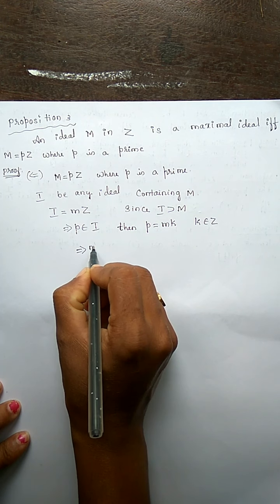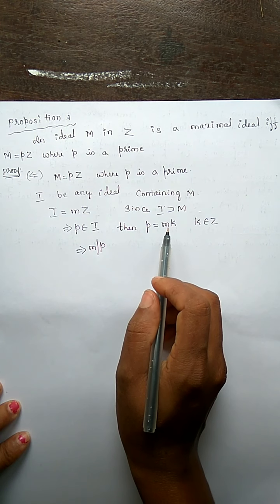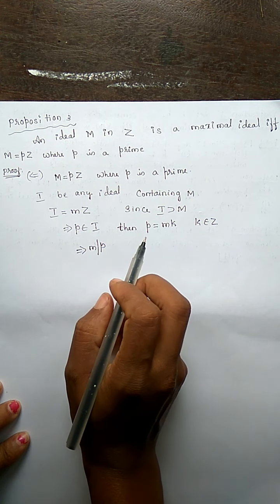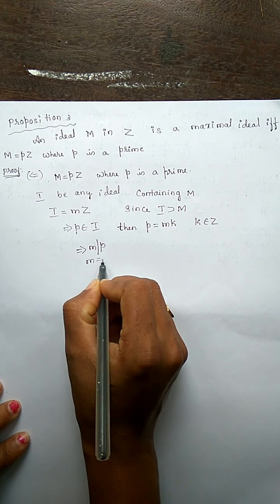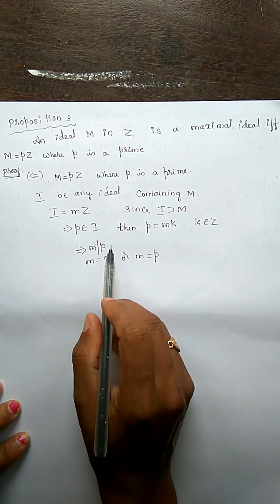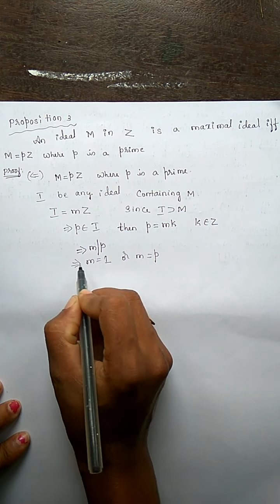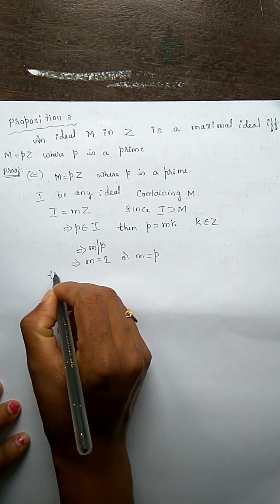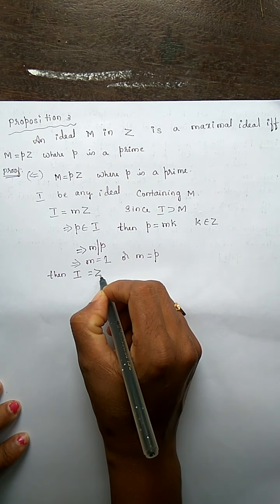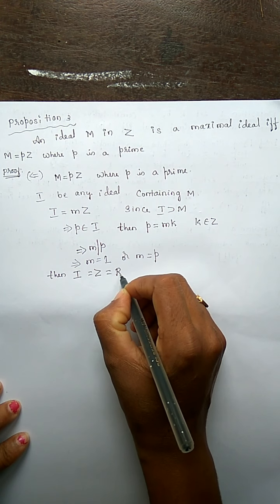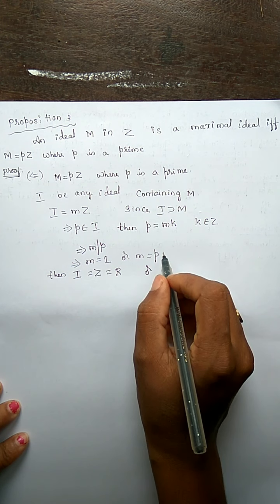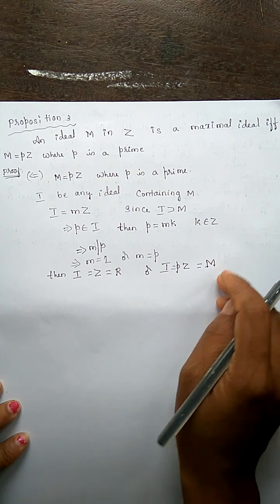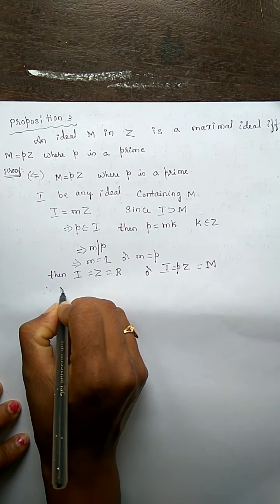So p equals m times k implies m divides p. Since p is a prime, m must be either 1 or p. When m equals 1, I equals 1 times Z, which is Z — the full ring. When m equals p, I equals pZ, which is M. So M is a maximal ideal.